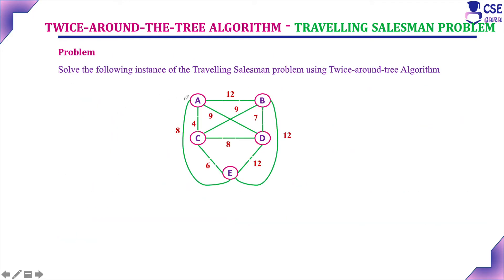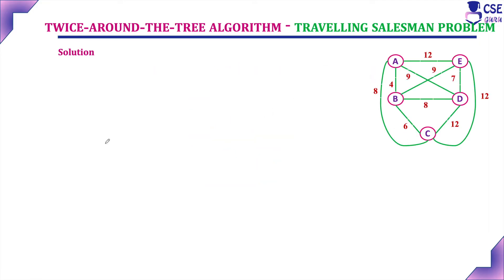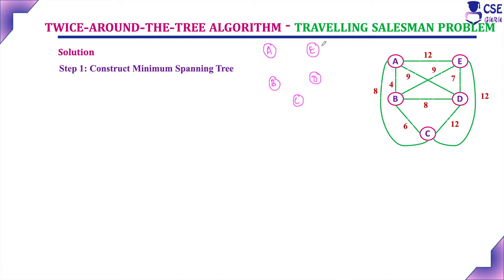Now we will implement this algorithm with an example: solve the following instance of the travelling salesman problem using the twice around the tree algorithm. This is the given graph. Step 1 is to construct the minimum spanning tree for the given graph. First, we have to consider all the vertices in the given graph and identify the minimum cost edges to include. Here in this given graph, the minimum cost edge is 4.